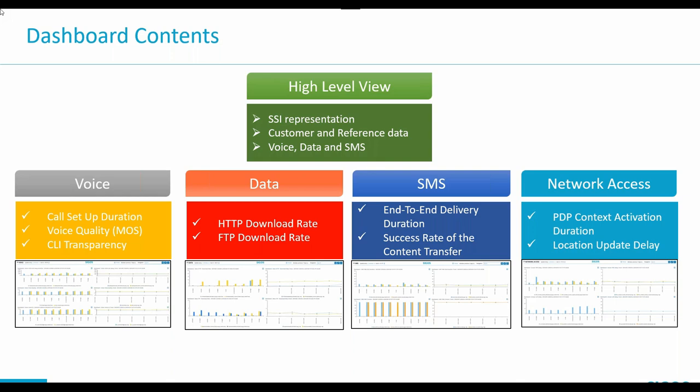The services covered are voice, data, and SMS. For each service, we have a specific service dashboard where only the most important KPIs are represented — KPIs that are important for the user experience. For voice, that includes call setup duration, voice quality, and CLI transparency — whether the CLI arrived or not. For data, we look at the download rate. We also have the FTP download rate because in many cases our customers are performing GRQ tests, and in those GRQ tests they mostly still use FTP download.